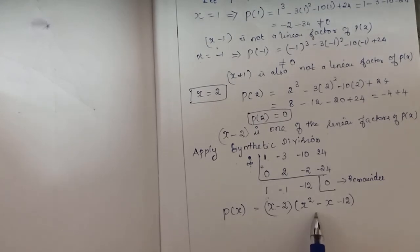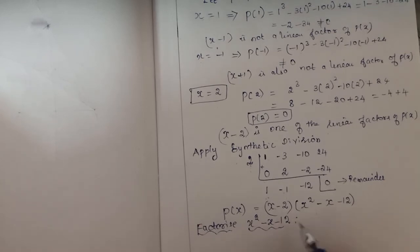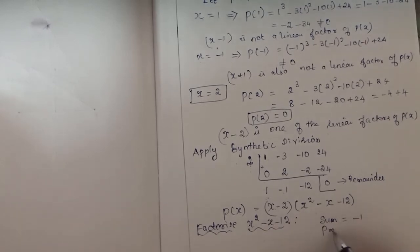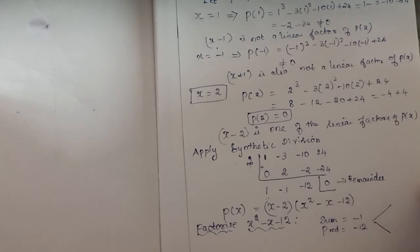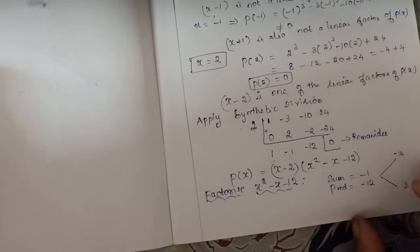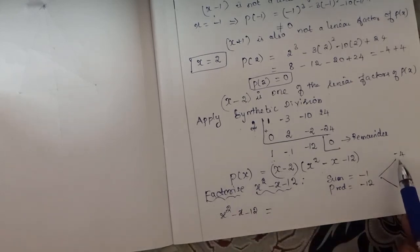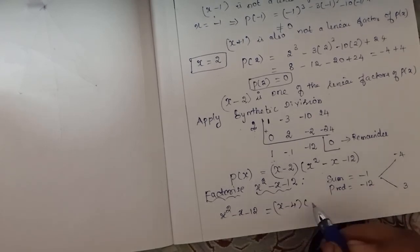Now we factorize the quadratic polynomial x square minus x minus 12 by splitting the middle term. Sum is minus 1 and product is minus 12. The two numbers are minus 4 and plus 3, since minus 4 plus 3 equals minus 1 and minus 4 into 3 equals minus 12. So x square minus x minus 12 equals x minus 4 into x plus 3.